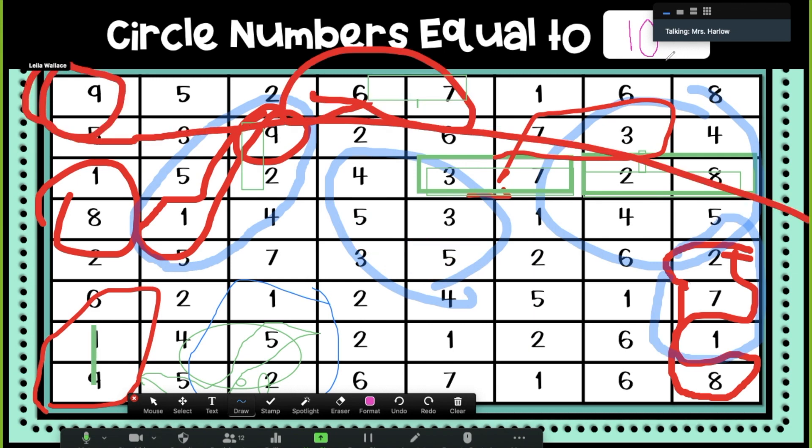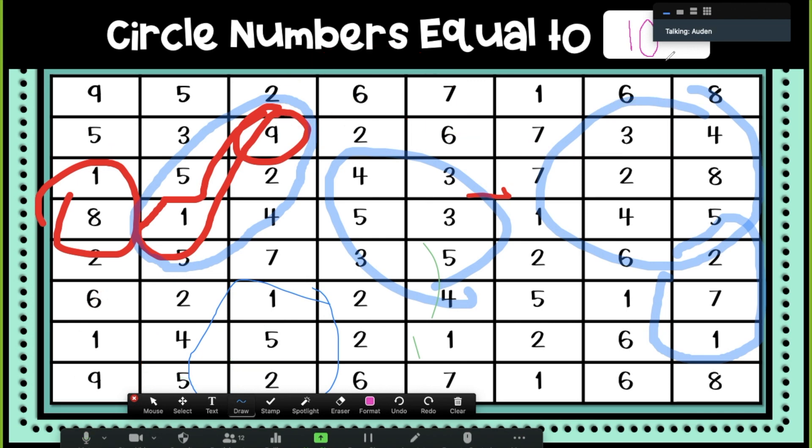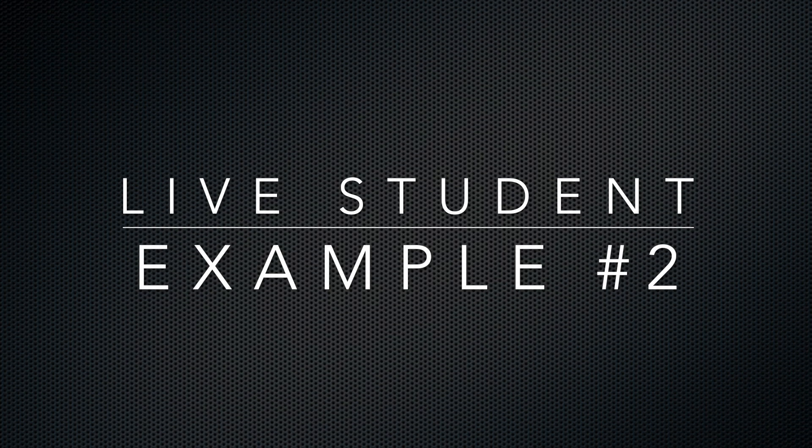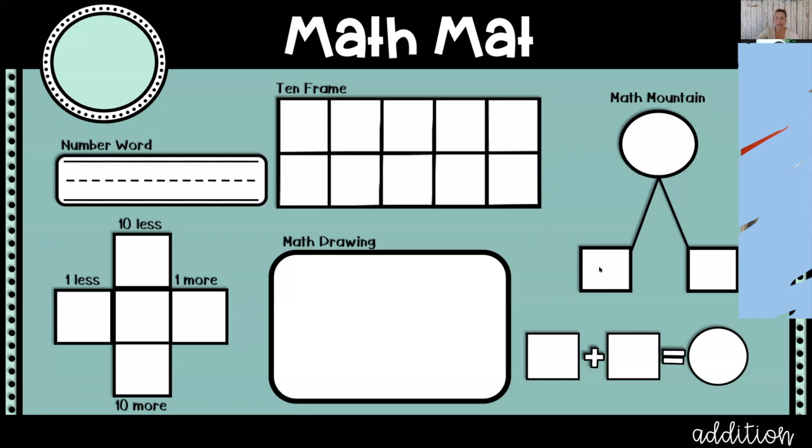All right, so this is a math mat, and there are a couple of different ways we can participate with this math mat. We are going to pick volunteers to help us. All right, so we're going to use the live annotation, but you're going to wait to be called on in order to participate. Okay, we're not all doing it at the same time. All right, so I'm going to turn on the annotation.